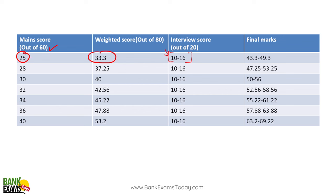So let's assume if you scored 25 marks in the Mains exam and only 10 marks in the interview, your final score would be 43.3. On the other hand, if you scored 28 marks and a full 16 marks in the interview, then your final score would be 53.25.